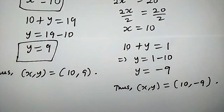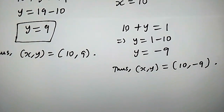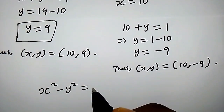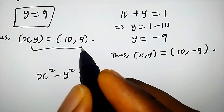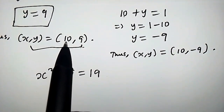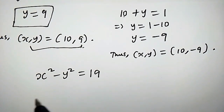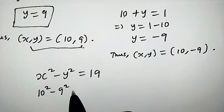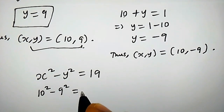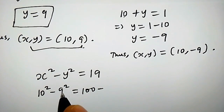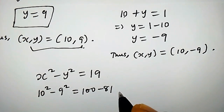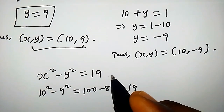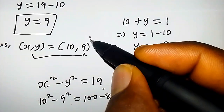Let us check if what we've done is right. Recall from the original question: x squared minus y squared equals 19. For the first solution, x is 10 and y is 9. We have 10 squared minus 9 squared, which equals 100 minus 81, that is 19. This matches the right hand side, so this solution is true.